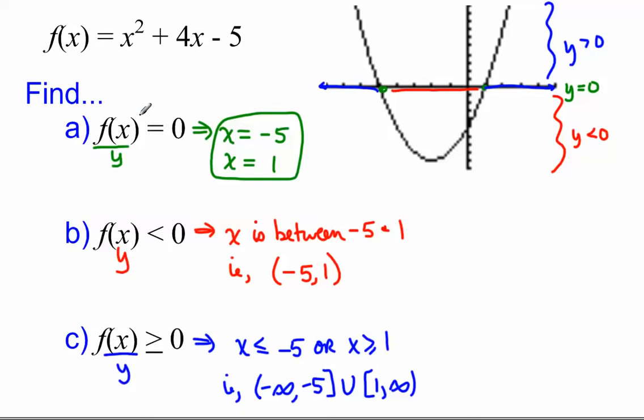And the first question is f(x) equals 0. What are the zeros? What are the x's that make f(x), y equal to 0? Well, we know that's the negative 5 and 1.